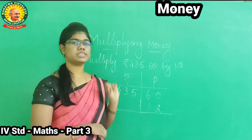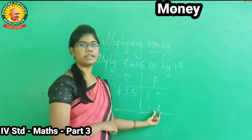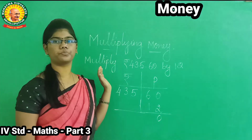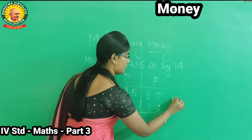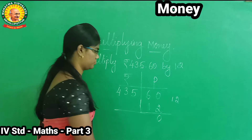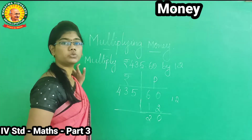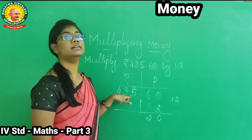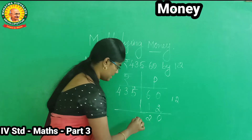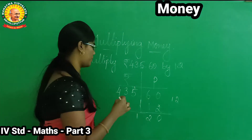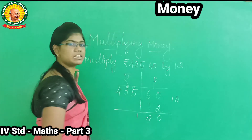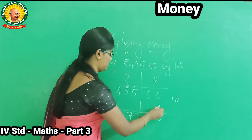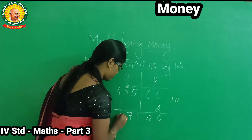2 into 0? Zero. 2 times 6 is 12 — write 2, carry 1. 2 times 5 is 10, plus 1 is 11 — write 1, carry 1. 2 times 3 is 6, plus 1 is 7. 2 times 4 is 8. Very good.